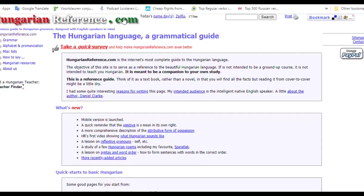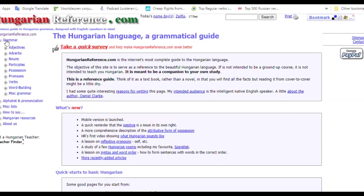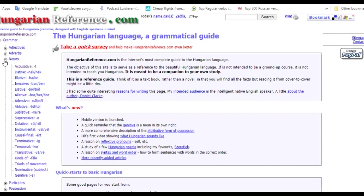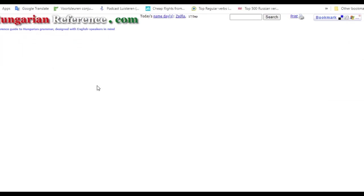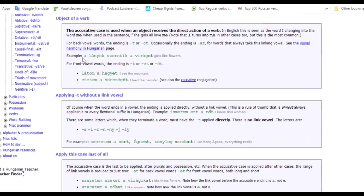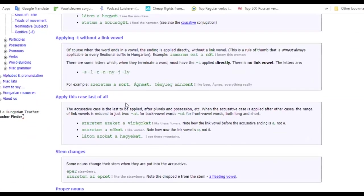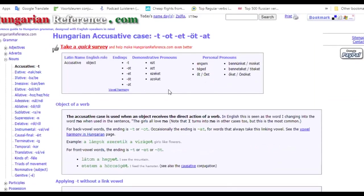Now the first one is called hungarianreference.com. If you go here on the left side and click on grammar, you have the whole grammar divided into different sections and subsections: adjectives, adverbs, nouns, etc. If you click on nouns you have all the cases listed with the corresponding suffixes. You click on accusative for example, you have here on this page a lot of Hungarian sentences, examples and everything explained clearly in English.